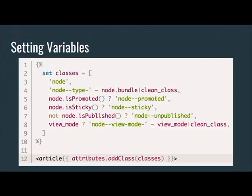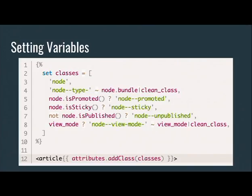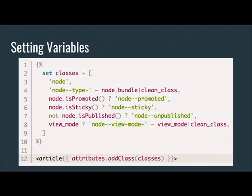To set variables, use the set keyword, then the name and value. For example, you can concatenate 'node--type-' with the node bundle using a tilde. You can call methods and depending on the return value set more variables, or negate logic using 'not'. You then use attributes dot add class to print CSS classes in the HTML. This is the mechanism for passing computed values into the template before printing them.